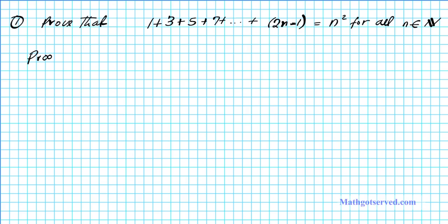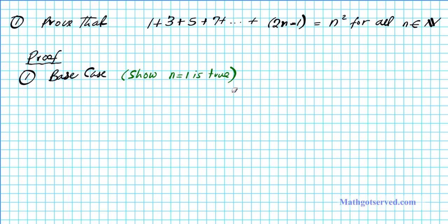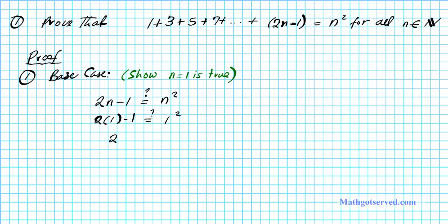For our proof we're going to break it into three parts. Part 1 is the base case. We want to show that n equals 1 is true — plugging 1 into the left side, do we get the same result on the right side? For the base case, the statement is 2n minus 1 equals n squared. Putting in n equals 1: 2 times 1 minus 1 equals 1 squared. Simplifying: 2 minus 1 equals 1, and 1 equals 1. Absolutely — this checks out. We've shown that the base case is true.